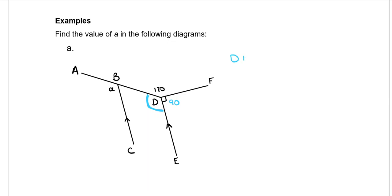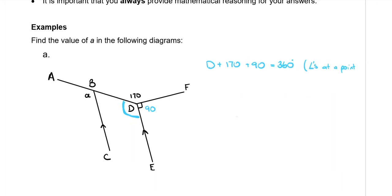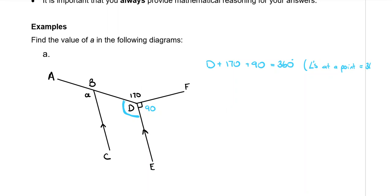So, starting with the D, D plus the 170 plus the 90 is equal to 360 degrees, because angles at a point equal 360.